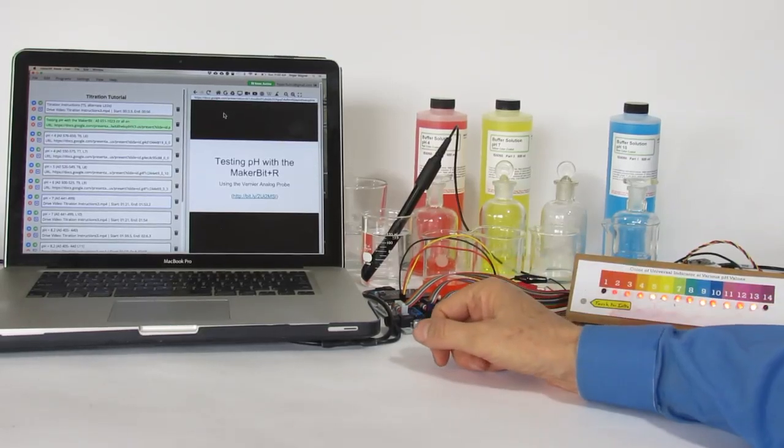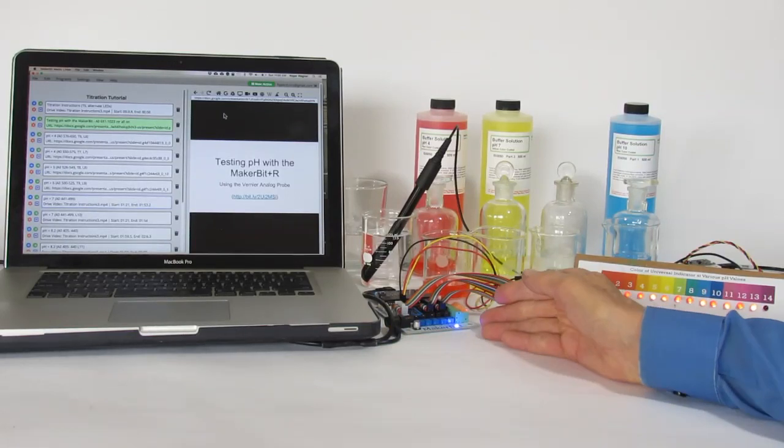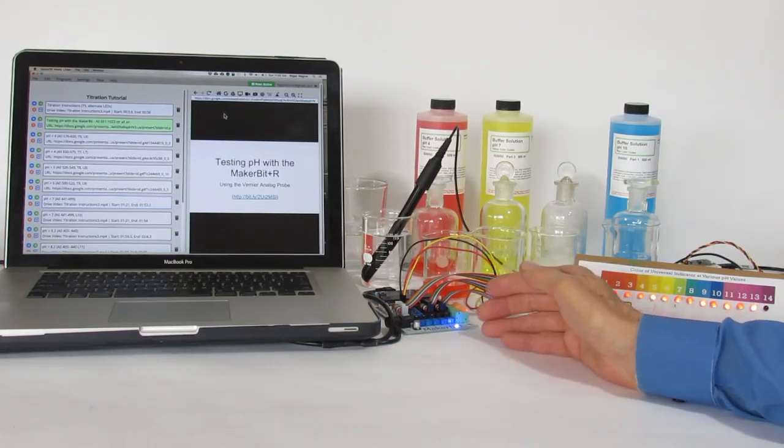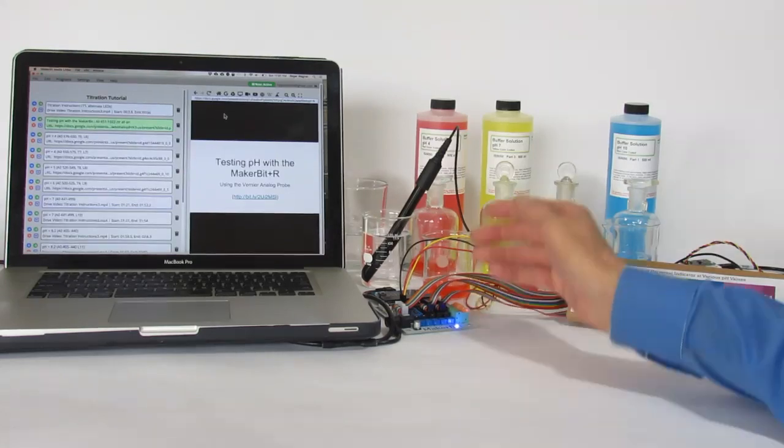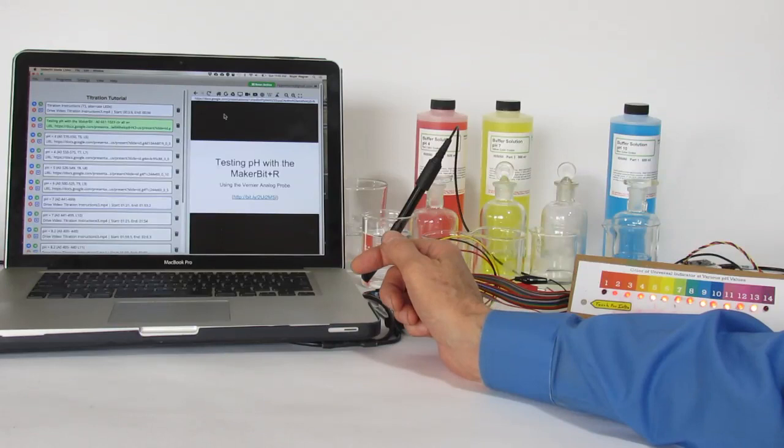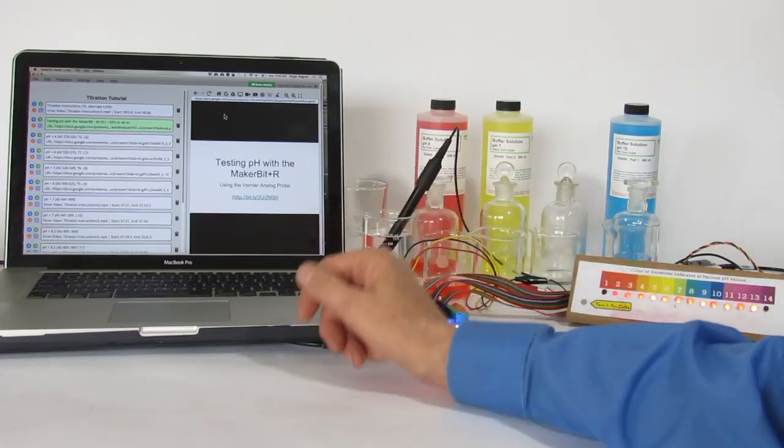Hi, this is Roger Wagner and in this video we're going to look at a demonstration of using the MakerBit along with the Vernier pH probe to look at real-time pH values. Using the MakerBit media linker we can associate any particular pH value with digital media.